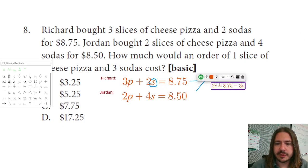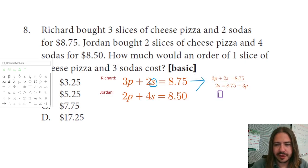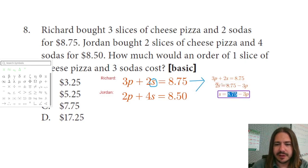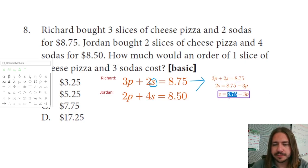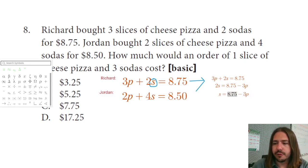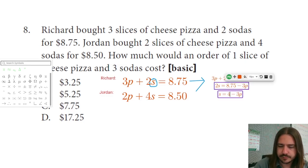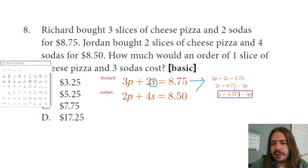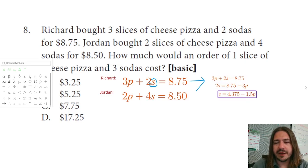Then I'm going to divide both sides by two. This is going to give me some pretty ugly decimals, but that's just the way it goes sometimes. I'm going to break out the calculator — you do get a basic four-function calculator on this one. We need to do 8.75 divided by two, which is 4.375. And 3 divided by 2 is 1.5. So S = 4.375 minus 1.5P.